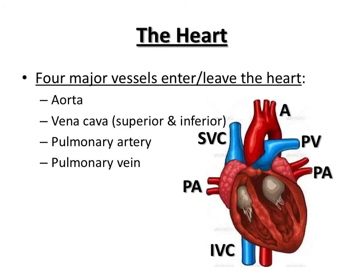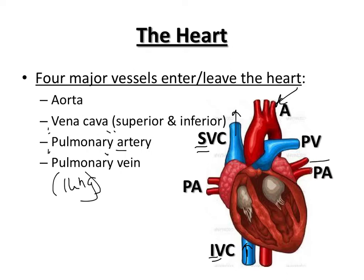When we look at the heart, we have four major vessels that enter or leave it. The aorta — the big red one on top — carries blood away from the heart to the body. The vena cava, which has a superior or upper part and an inferior or lower part, is your primary vein that brings blood back from the body. The pulmonary artery carries blood away from the heart to the lungs, and the pulmonary vein brings blood from the lungs back to the heart.